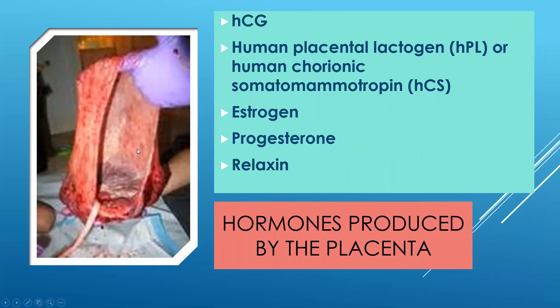The placenta produces HCG — human chorionic gonadotropin — which is what we're looking for when we do a pregnancy test. It also produces human placental lactogen, a large amount of estrogen and progesterone — this is how it tells your body not to produce any more eggs and not to lose the uterine lining while growing the fetus. It also produces relaxin, which is the hormone that helps the hip joints loosen and relax. That's why women get that waddling gait — you can tell they're pregnant from behind. It also usually works on women's feet, and sometimes you'll see women gain a shoe size or more with their pregnancy.